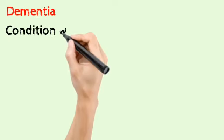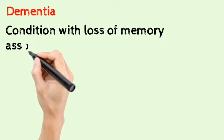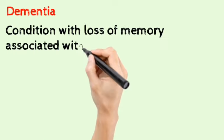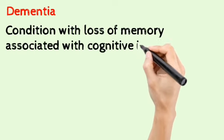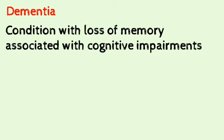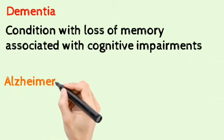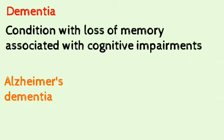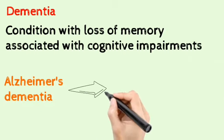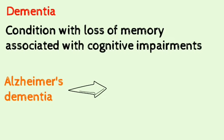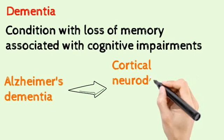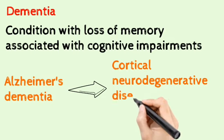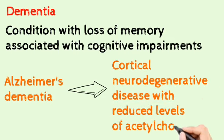Dementia is a condition where there will be loss of memory associated with other cognitive impairments. The most common dementia is Alzheimer's dementia, which is the most common cortical neurodegenerative disorder, with reduced levels of acetylcholine.